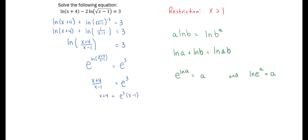Now to solve this equation we can multiply both sides by x minus 1, and expanding the right-hand side we get e cubed times x minus e cubed.